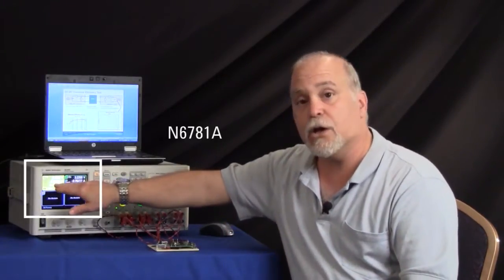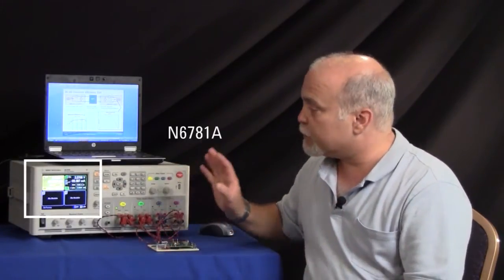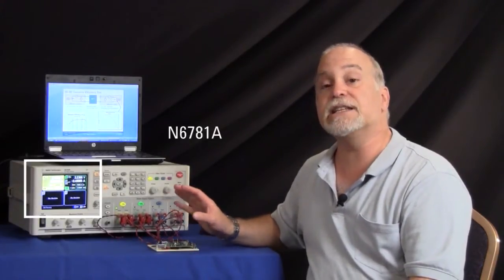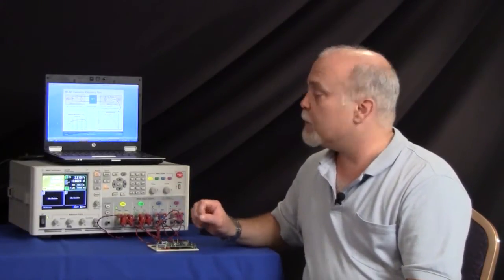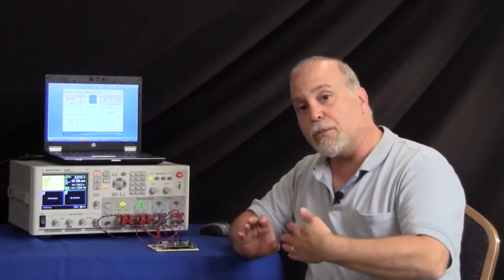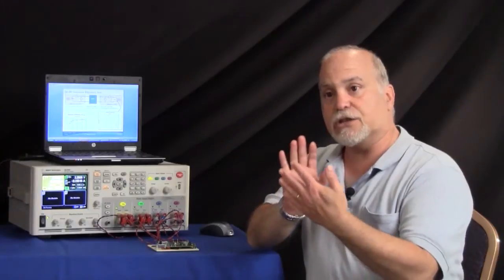Now channel number one will be connected to the input side of the DC to DC converter, sourcing the power, and channel number two will be on the output side acting as an e-load absorbing the power. But the critical function of that e-load side is it's going to sweep from low power to high power, so you can actually measure the efficiency across the entire operating range of the DC to DC converter, and that's the measurement that we'll be making.